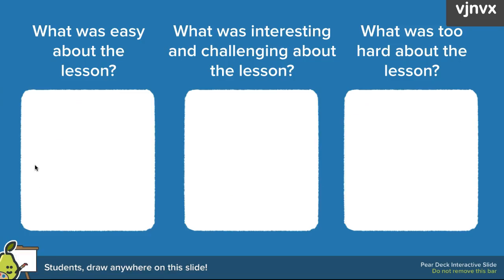This drawing slide is also a continuation of lesson reflection, taking the previous template a little further. Students can follow up on their thumbs up or thumbs down from the previous slide — they can draw it out, use the text tool to type it out, and then drag their response to the appropriate area. If you don't have enough time to do all three, you can edit this template to do one or two at a time.